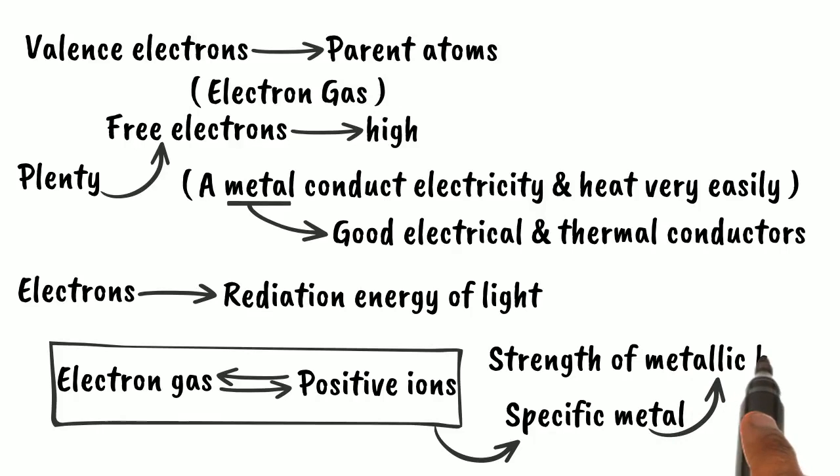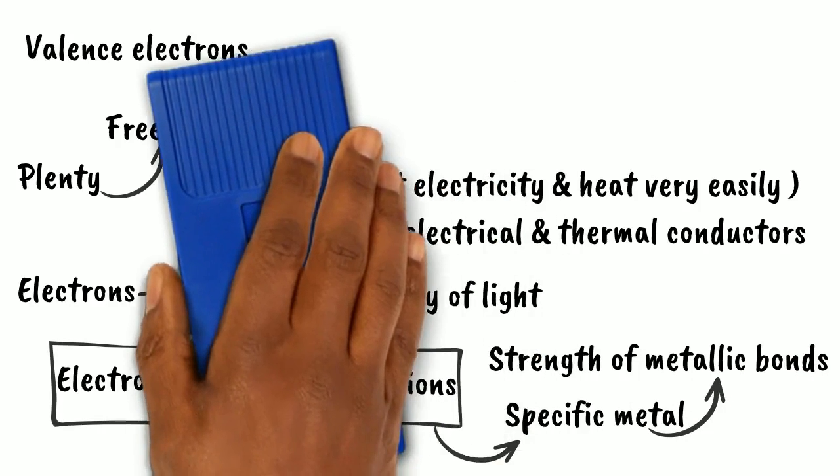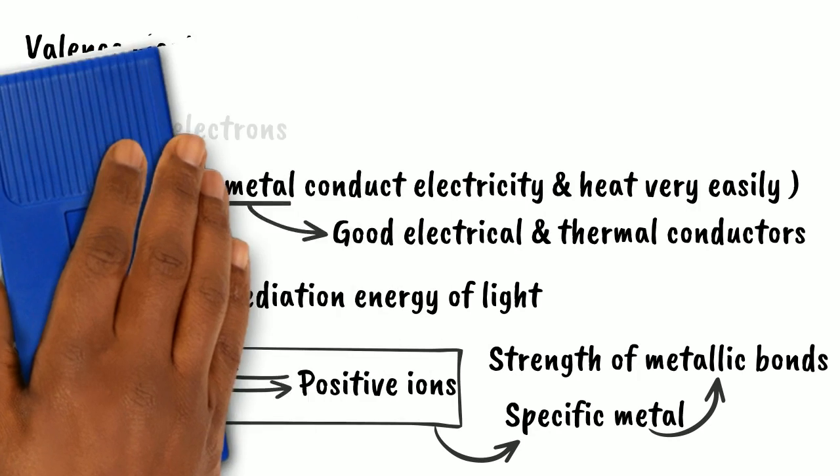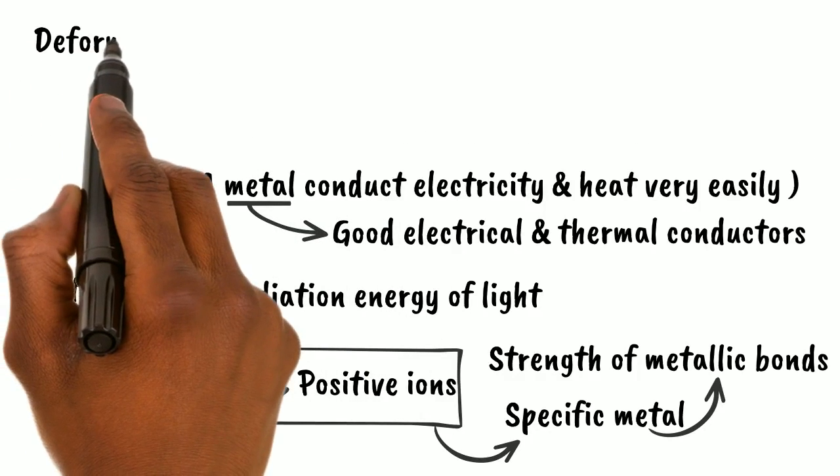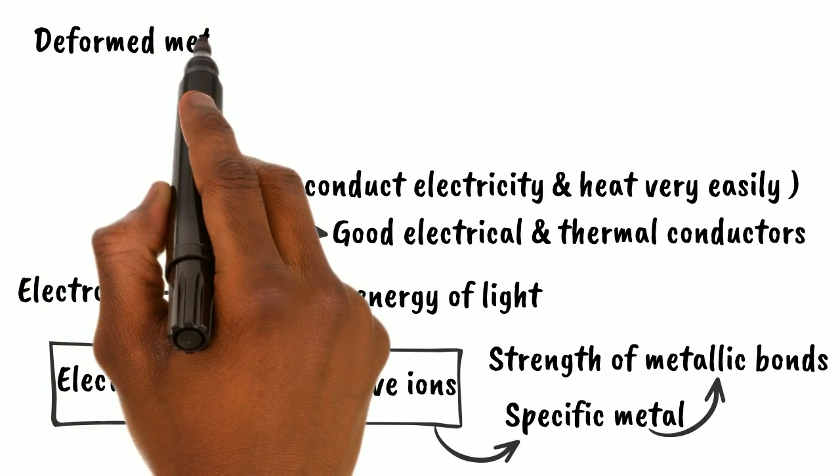As the ions can move without breaking the district bonds, the metals can be deformed without affecting the overall strength of the materials. That means every bit of the deformed metal is as strong as the original one.